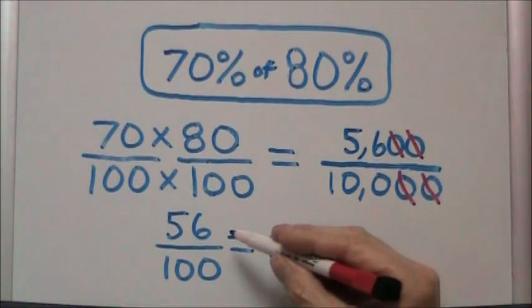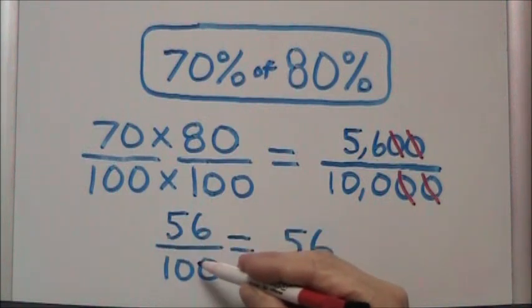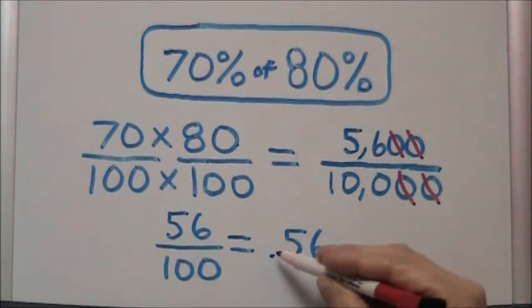To change this into a decimal, we just move the decimal point two places to the left, remove our fraction bar and denominator of 100, and we're left with .56.